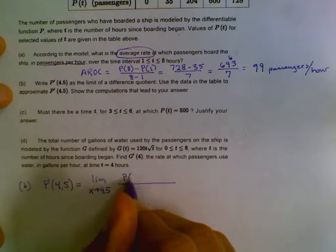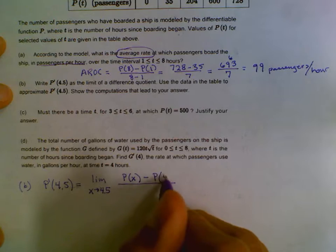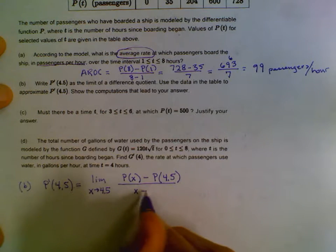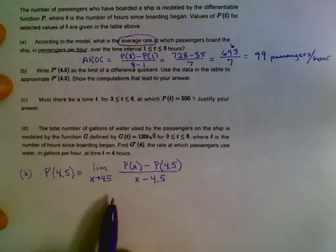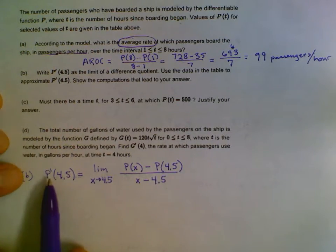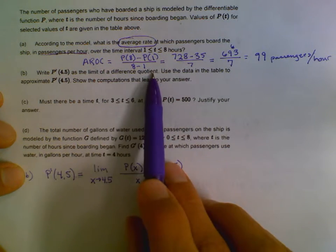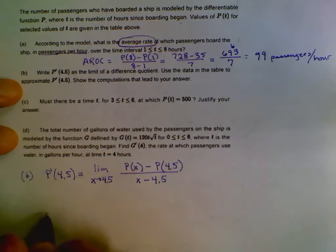So then we'll say P of x minus P of 4.5 all over x minus 4.5. So this would be a fine answer as writing this down as the limit of a difference quotient.